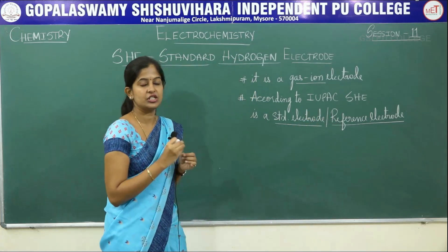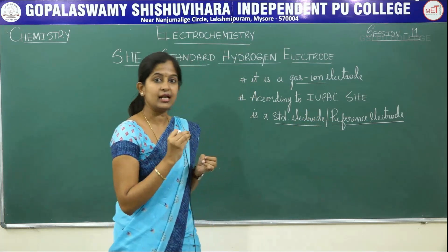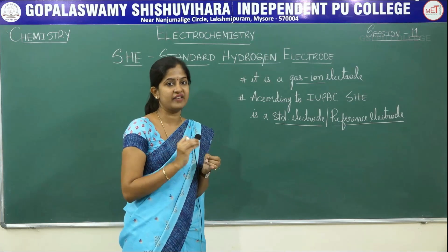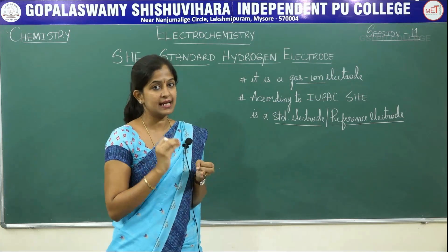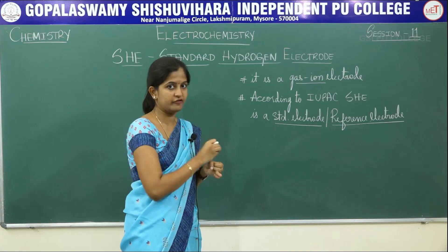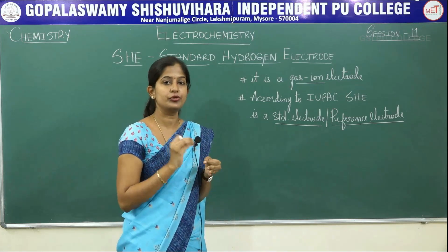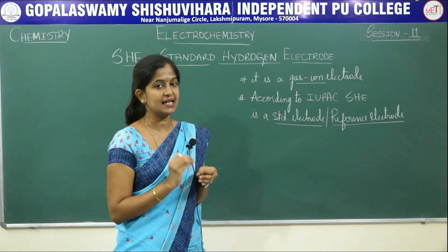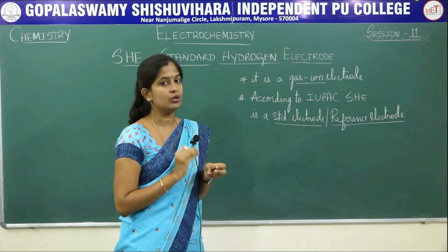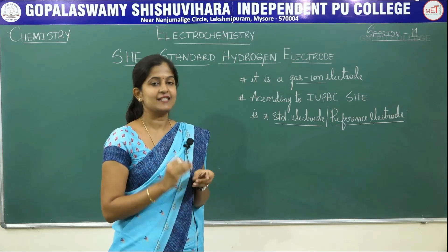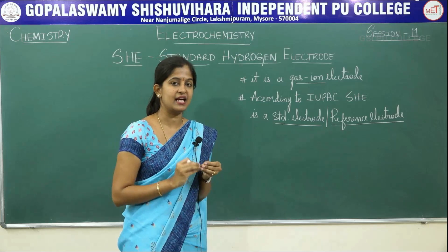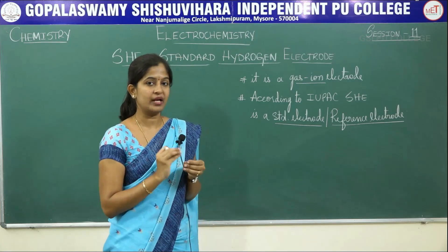So what should you study about SHE? You have to know about the construction of SHE — very important. You will be having a two-mark question for construction of SHE as well as its cell potential. You should know what is the electrode potential of SHE, as well as the cell representation. These are the three main things about SHE: construction, electrode potential, and cell representation.